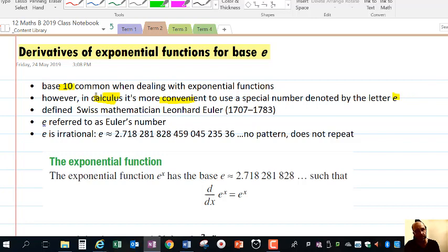It's a special number defined by Leonard Euler, who was a Swiss mathematician in the 1700s. Euler's number is an irrational number. There are various definitions of e, this video won't go into those, but basically e is an irrational number, so it has no pattern, it does not repeat, and some of the digits are pictured there.